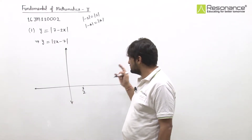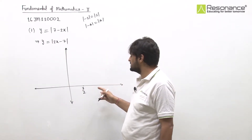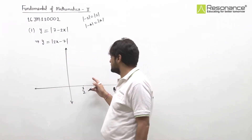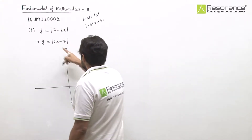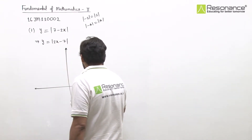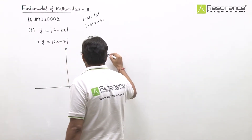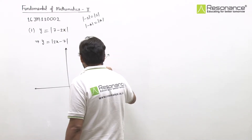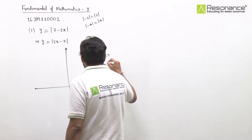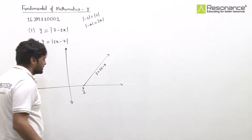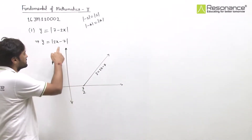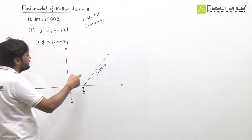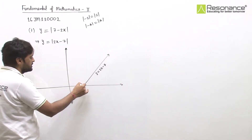At x = 7/2, the value is 0. For any value greater than 7/2, say 5 or 10, the value will be greater than 0. The coefficient of x is 2. For values less than 7/2, say minus 10, the mod function makes the value positive — greater than 0.